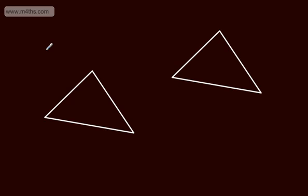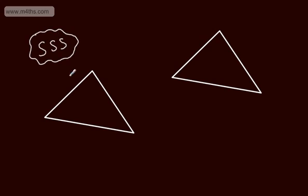The easiest and most intuitive test is Side-Side-Side (SSS). Our three elements are equal sides — the corresponding side lengths are the same. We've got this one equal to this one, this one equal to the one over here, and finally these two equal. So this is said to be Side-Side-Side, or SSS.